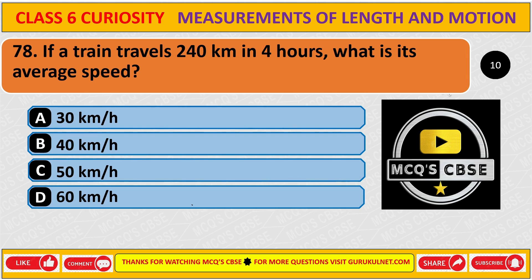If a train travelled 240 km in 4 hours, what is its average speed? The correct answer is D, 60 km per hour.